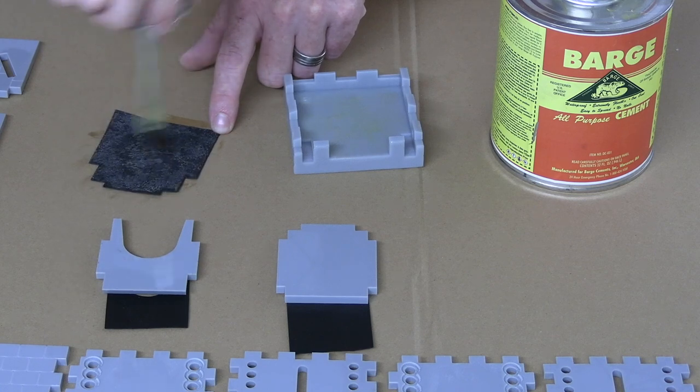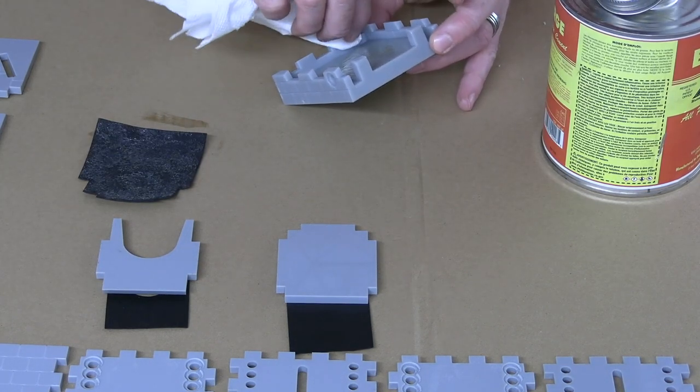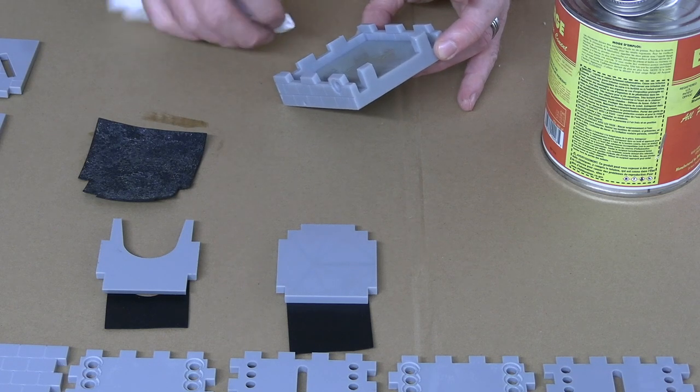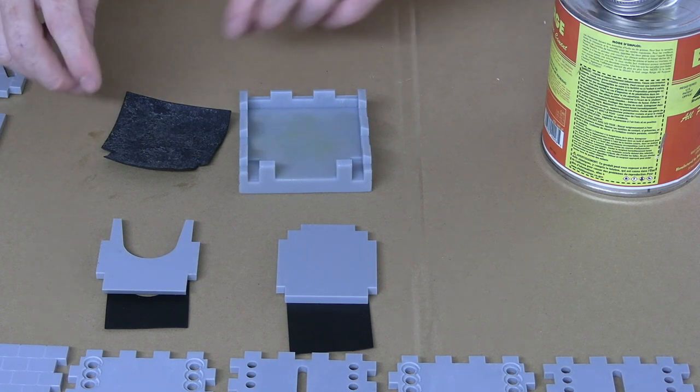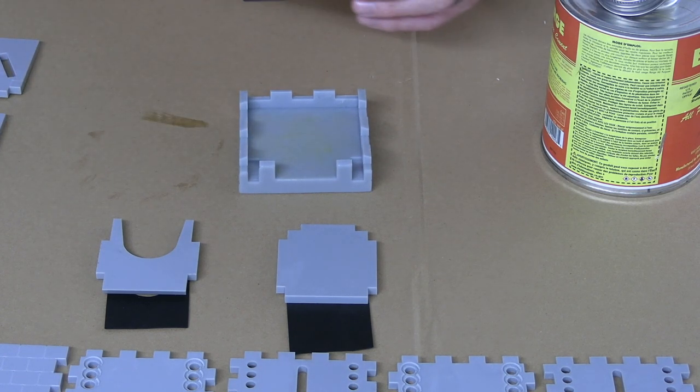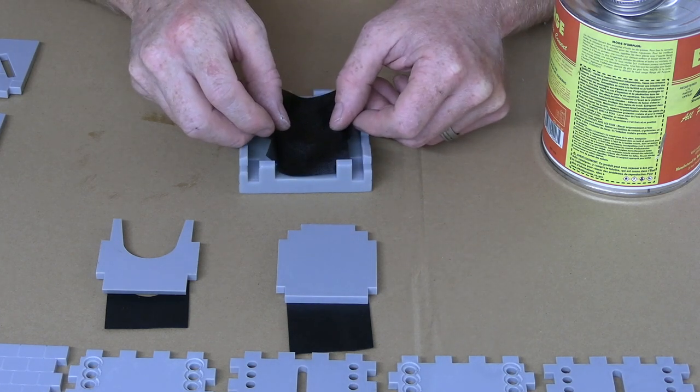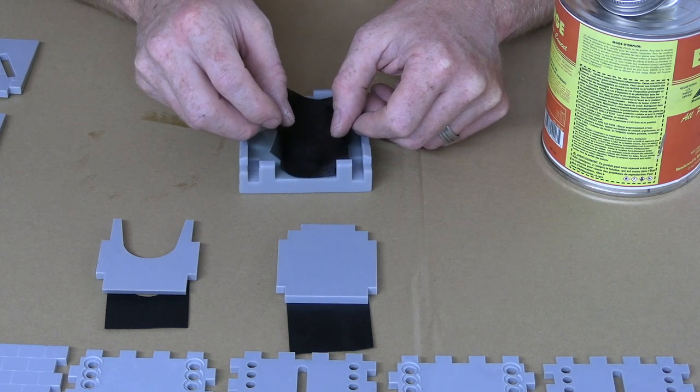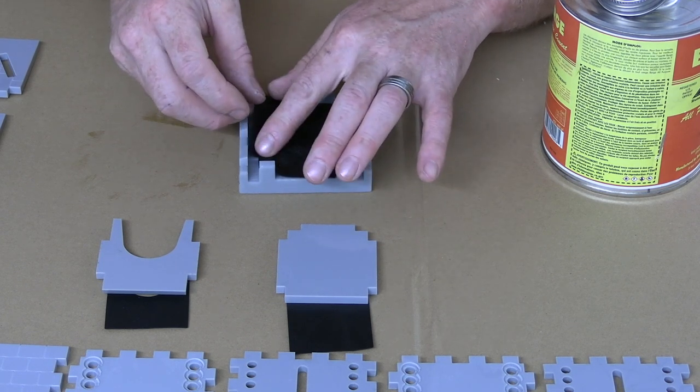If you're familiar with contact cement, then you'll know that you want to let this set up and dry until it's tacky and ready to be applied together. Different brands have different dry times, so follow the instructions on the can. When it's time to mate the two surfaces together, it can be a bit intimidating, but just take your time and make sure that you start with one corner and apply it as close to the edge as possible.